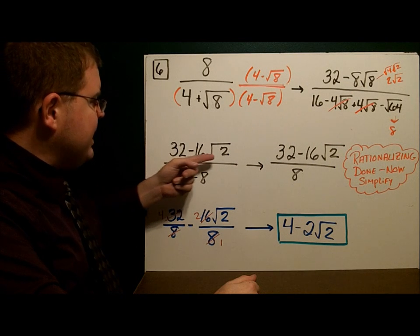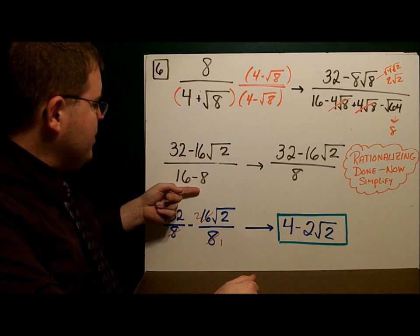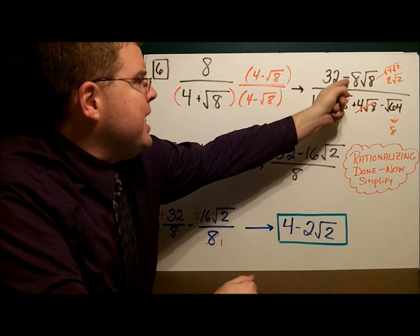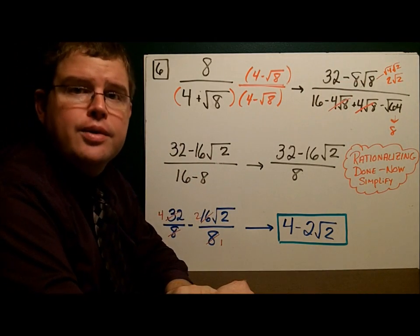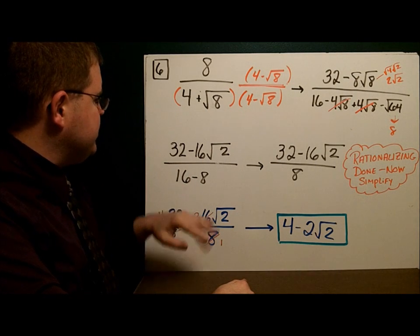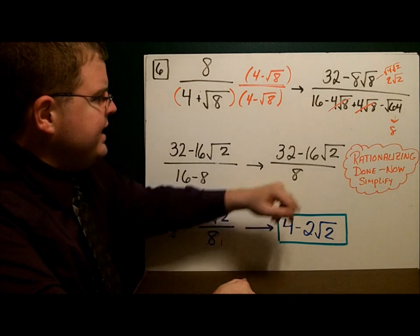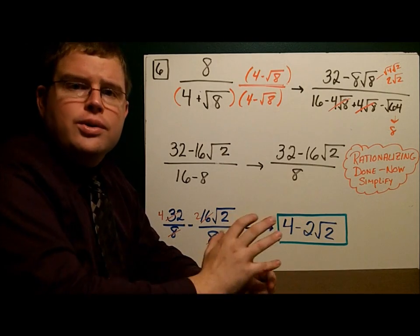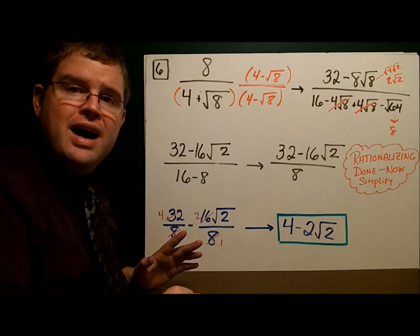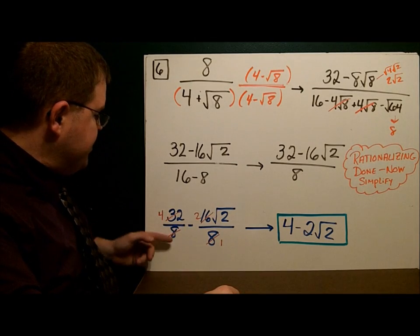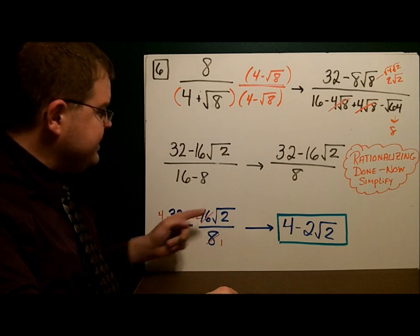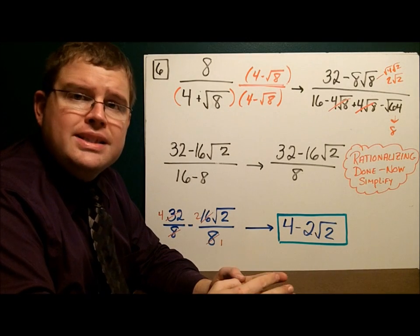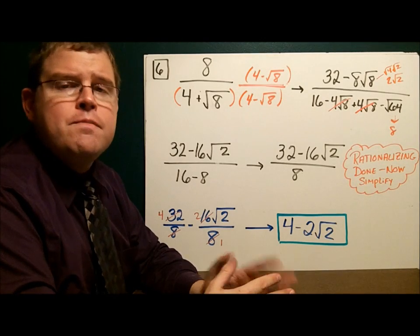So I have 32 minus 16 square roots of 2 over 16 minus 8, which is 32 minus 16 square roots of 2 over 8. My rationalizing is done — that's the new piece. From here it's all old stuff: break it apart and simplify each piece. 32 over 8 is 4, and 16 over 8 is 2. So I'm left with 4 minus 2 square roots of 2. If you have a binomial in the denominator, use the conjugate.